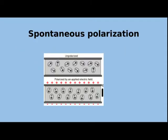To explain spontaneous polarization, you should first know what polarization is. A dielectric material consists of positive and negative charges separated by a distance, which constitutes a dipole. A solid material consists of a number of dipoles. When we apply a field, all positive charges align on one side and negative charges on the other — this is polarization. If this polarization happens in the absence of an electric field, we call it spontaneous polarization.